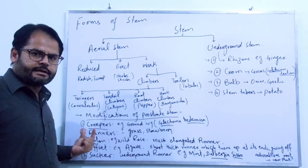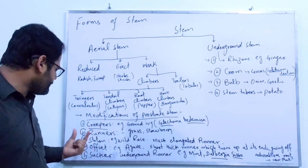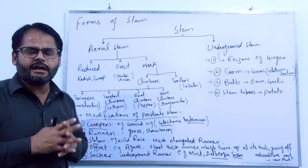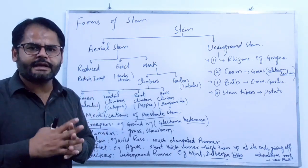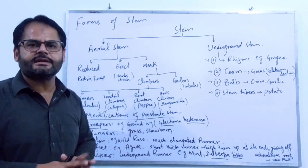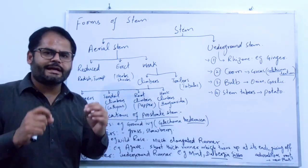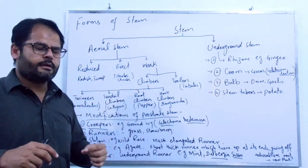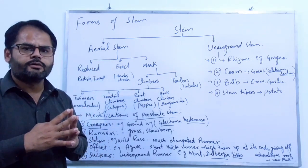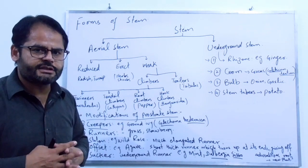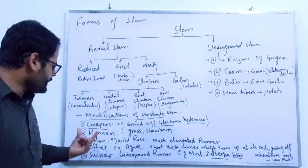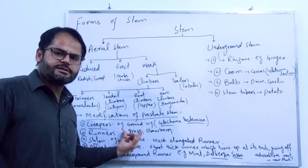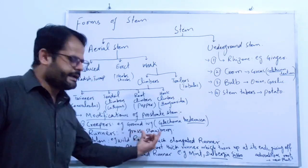The second category of prostrate stem is runner. A runner is a kind of stem which has nodes and internodes and spreads upon the surface of the soil. From the nodes arise leaves and branches, and from the lower surface of the nodes arise adventitious roots. The familiar examples of runner are grasses, also called turf grass, and strawberry.